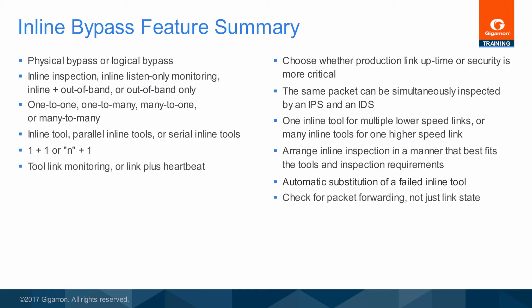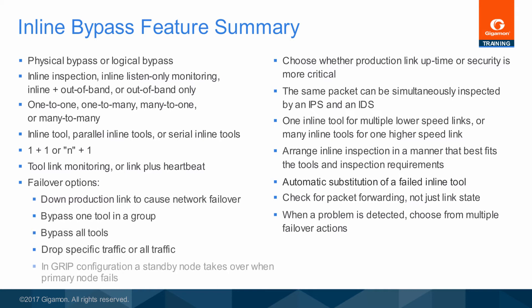For the highest level of security reliability, a spare inline tool can be configured as a ready substitute for any failed tool in the same group, and substitution takes place automatically. Determination of tool health is made by monitoring for active link and optionally by injecting packets into the traffic stream to ensure that inspection and packet forwarding is still taking place. In the event a tool or an HC2 node in GRIP configuration is considered to be down, a variety of failover actions can be set, ranging from how to handle the production link to how the tool group or series should be dealt with, to having a standby HC2 node take over when the primary node fails.